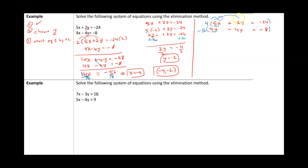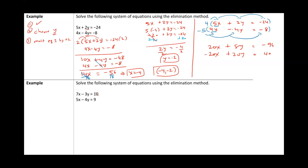The 4 distributes to all three terms of the first equation, and the negative 5 distributes to all three terms of the second. So we get: 4 times 5 is 20x, 4 times 2 is 8y, 4 times negative 24 is negative 96. Then negative 5 times 4 is negative 20x, negative 5 times negative 4 — negative times negative — is positive 20y, and negative 5 times negative 8 is positive 40. Adding down, the 20x and negative 20x cancel, giving 28y. Negative 96 plus 40 is negative 56. Dividing both sides by 28 gives y equals negative 2.